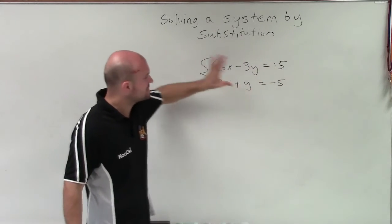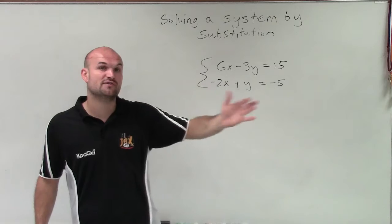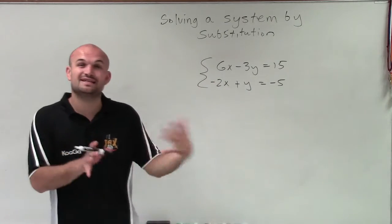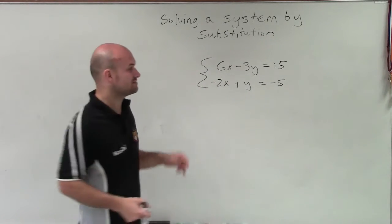Well, I don't have a variable that's isolated so far, so I need to find the variable that has a coefficient of 1 or negative 1. And that's going to be the easiest one for me to isolate to be able to apply substitution.